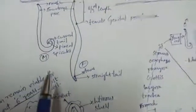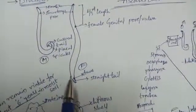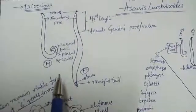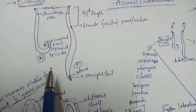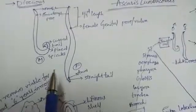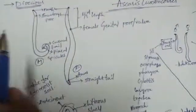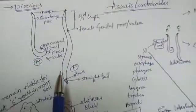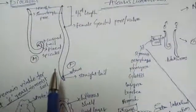Ascaris lumbricoides are commonly called roundworms. As you know, they are pseudocoelomate and belong to phylum Aschelminthes or Nemathelminthes. They are dioecious - male and female can be distinguished based on their shape and structure.